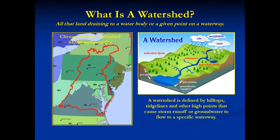On the left, the red line delineates the 64,000 square mile Chesapeake Bay watershed. Any rain falling within the red line will eventually enter the bay or evaporate back into the atmosphere. The perimeter is formed by hilltops, ridge lines, and other high points which divide the watershed of one body from that of another water body.